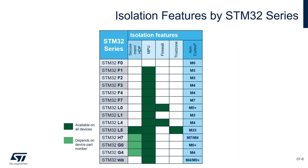This table summarizes the isolation features across different STM32 families. Secure memory (also called HDP) is present on L5, H7, G0, and G4. The MPU is available on every family except F0. The Firewall is present on L0 and L4. The new STM32 L5 microcontroller has secure memory, MPU, and also TrustZone, which is by far the best solution to isolate the secure and non-secure application.